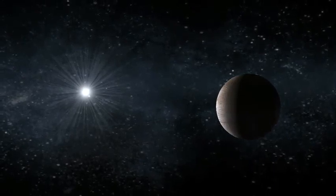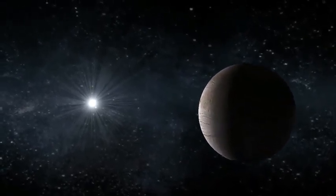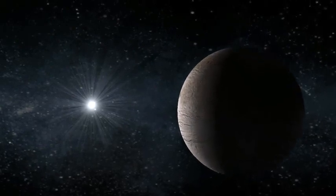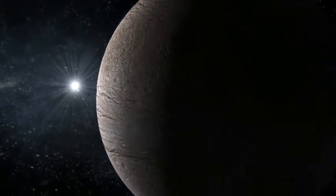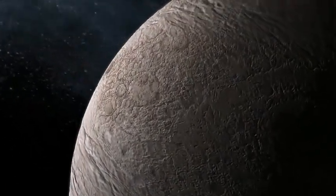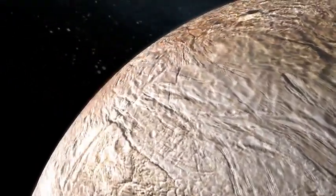As our techniques for finding exoplanets improve, we've been able to detect smaller and smaller worlds. Recently, astronomers have found several planets that are less than 10 Earth masses. These have been commonly called super-Earths, and while they are candidates for finding life elsewhere in the galaxy, they are not ideal.